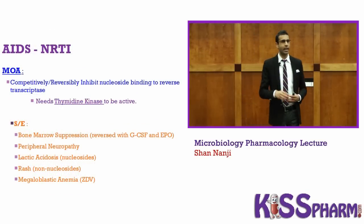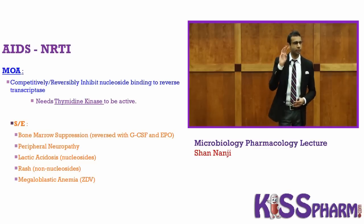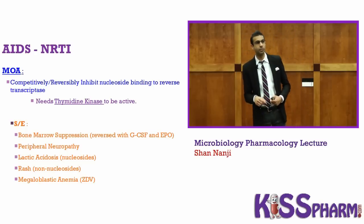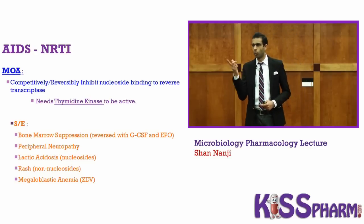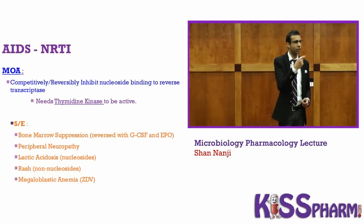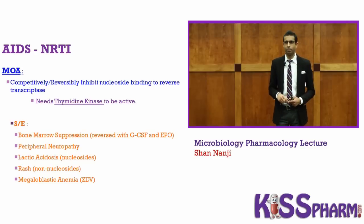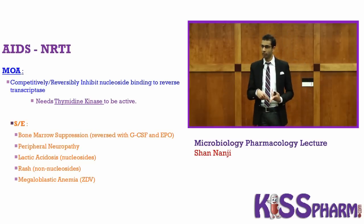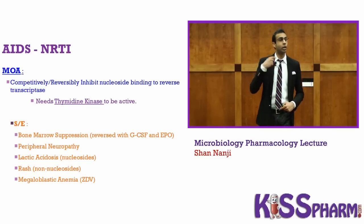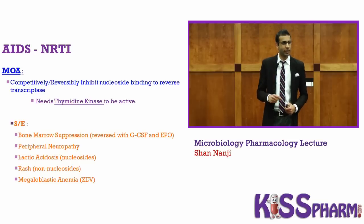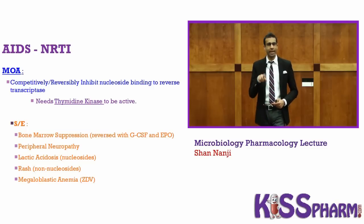In HIV/AIDS treatment, we give three drugs total. Two of those drugs must be NRTIs — nucleoside reverse transcriptase inhibitors. NRTIs competitively and reversibly inhibit nucleoside binding to reverse transcriptase. Because it's a competitive inhibitor, KM goes up and affinity goes down — meaning affinity and potency both decrease while KM increases. Competitive inhibitors bind to the active site, so you can add more substrate to overcome the problem.